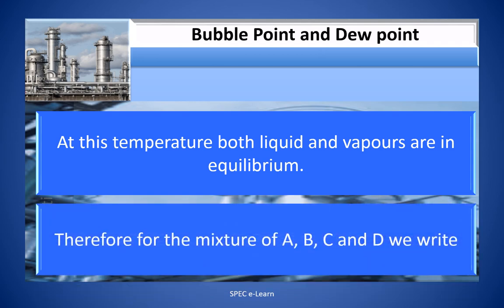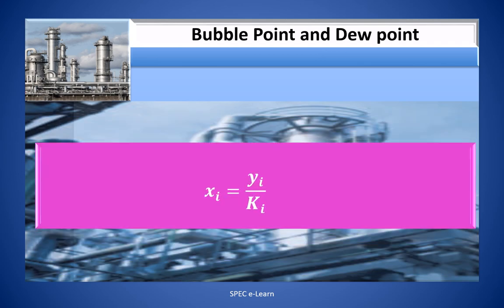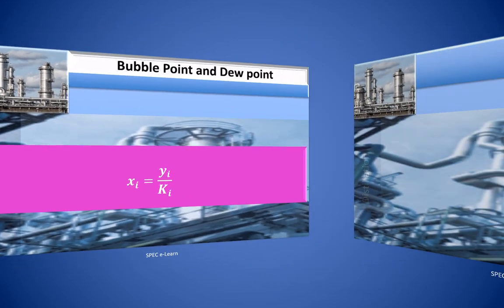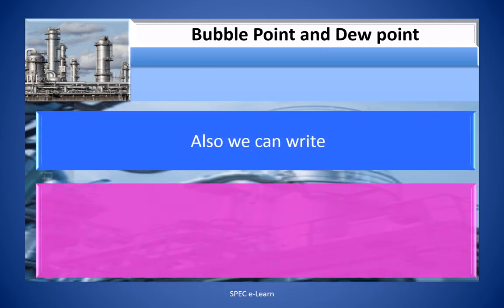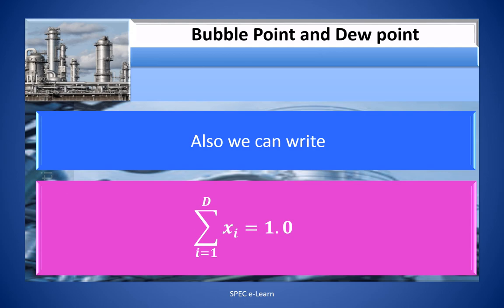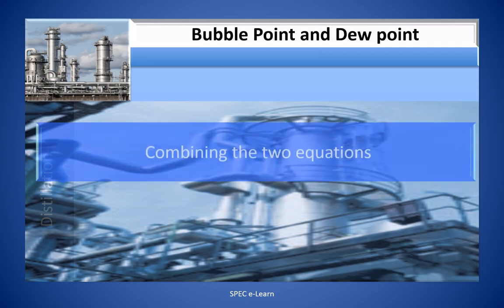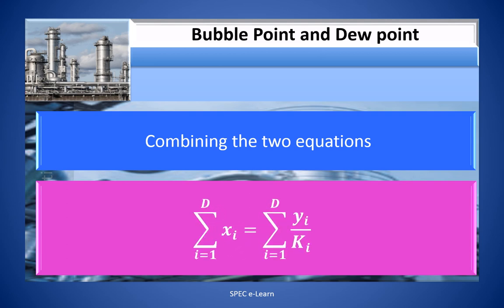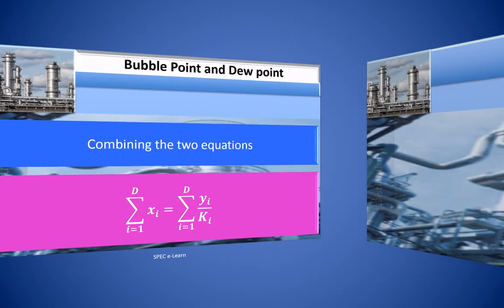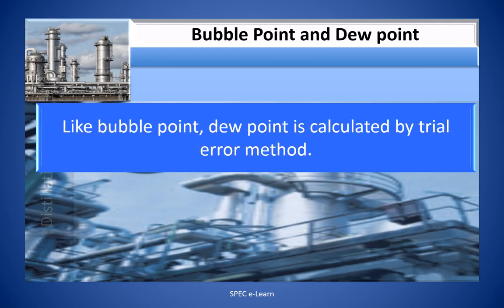Therefore, for a mixture of components a, b, c, and d, we write Xi equal to Yi divided by Ki. Also, we can write sigma from i equals 1 to d of Xi equals 1. Combining the two equations, we get: sigma from i equals 1 to d of Xi equals sigma from i equals 1 to d of Yi divided by Ki. Like bubble point, dew point is calculated by the trial-and-error method.